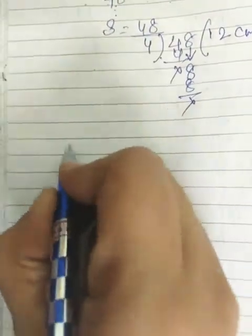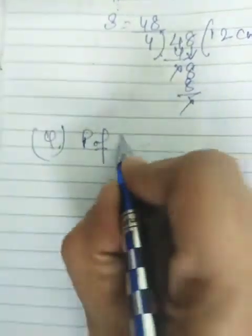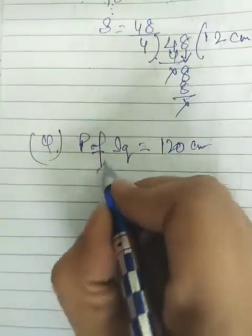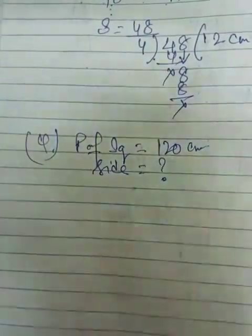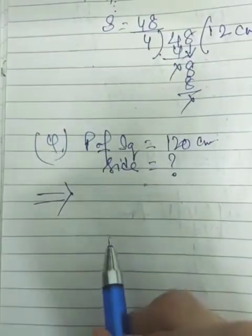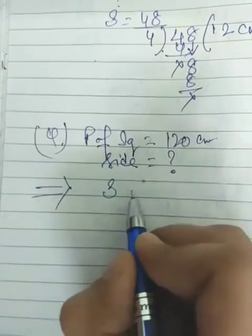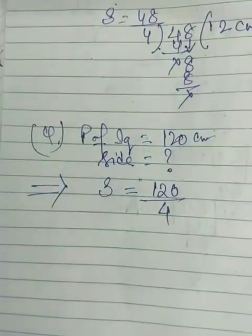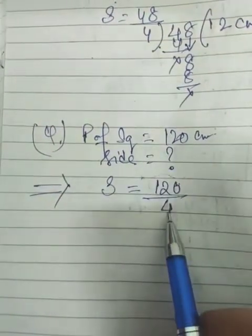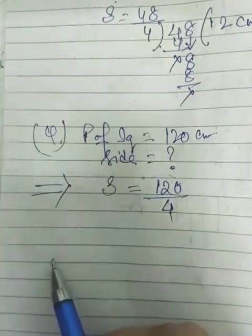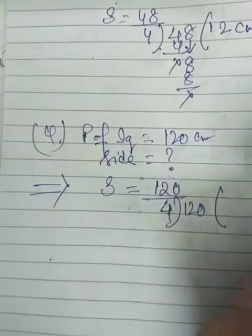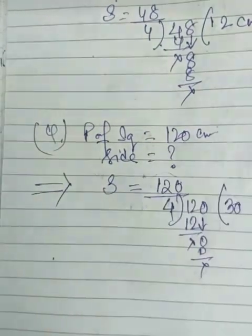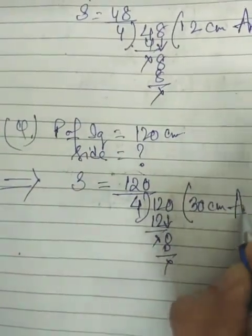Let us do one more sum. The perimeter of the square given is 120 cm, and we need to find the side. As we know, we divide the perimeter by 4 to find the side every time. So S = 120 ÷ 4: 4 into 12 is 3, and bring down 0. So it is 30 cm — that is the answer.